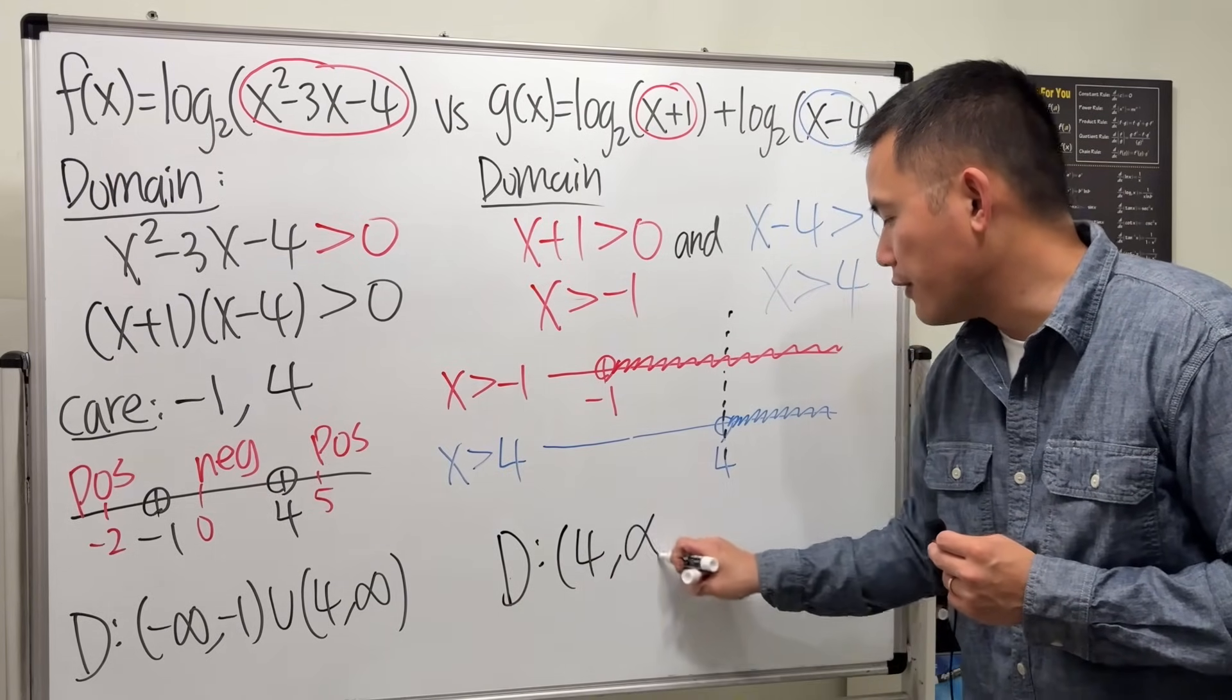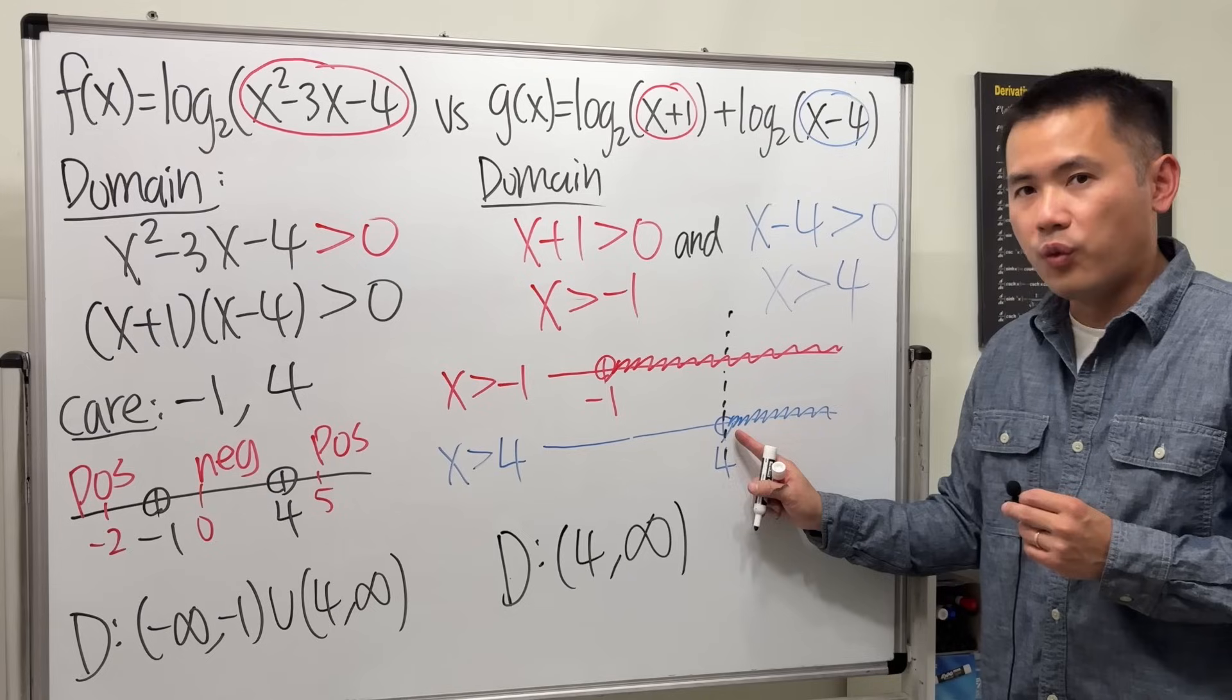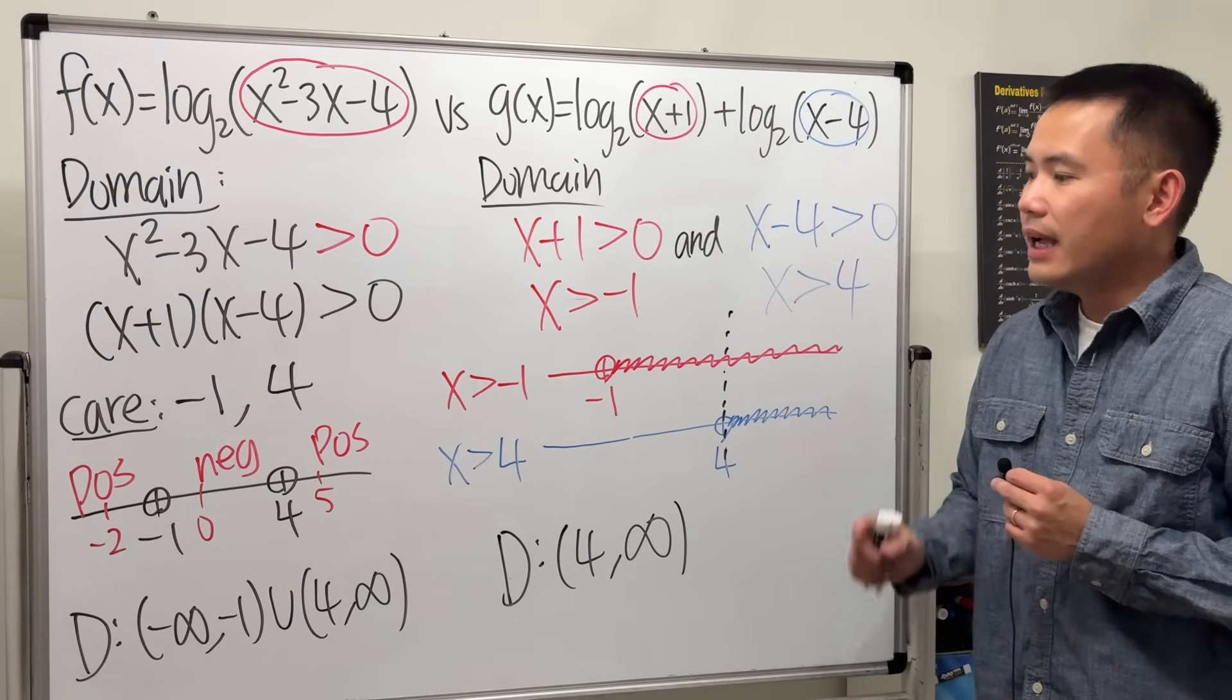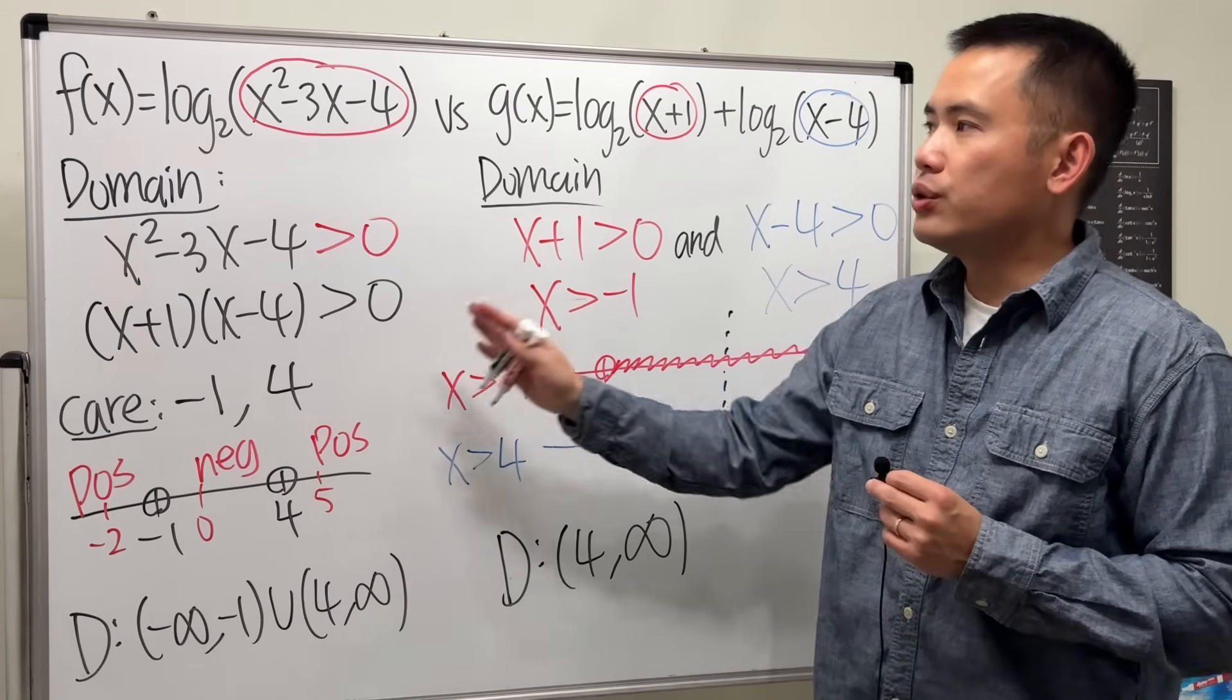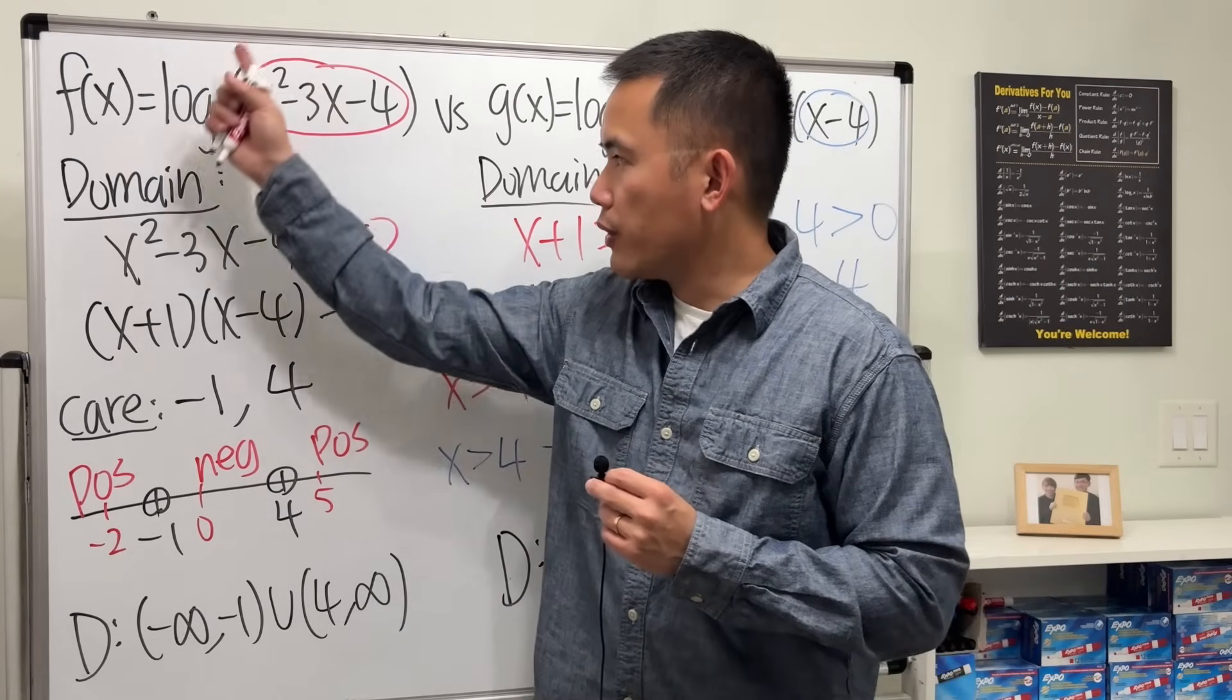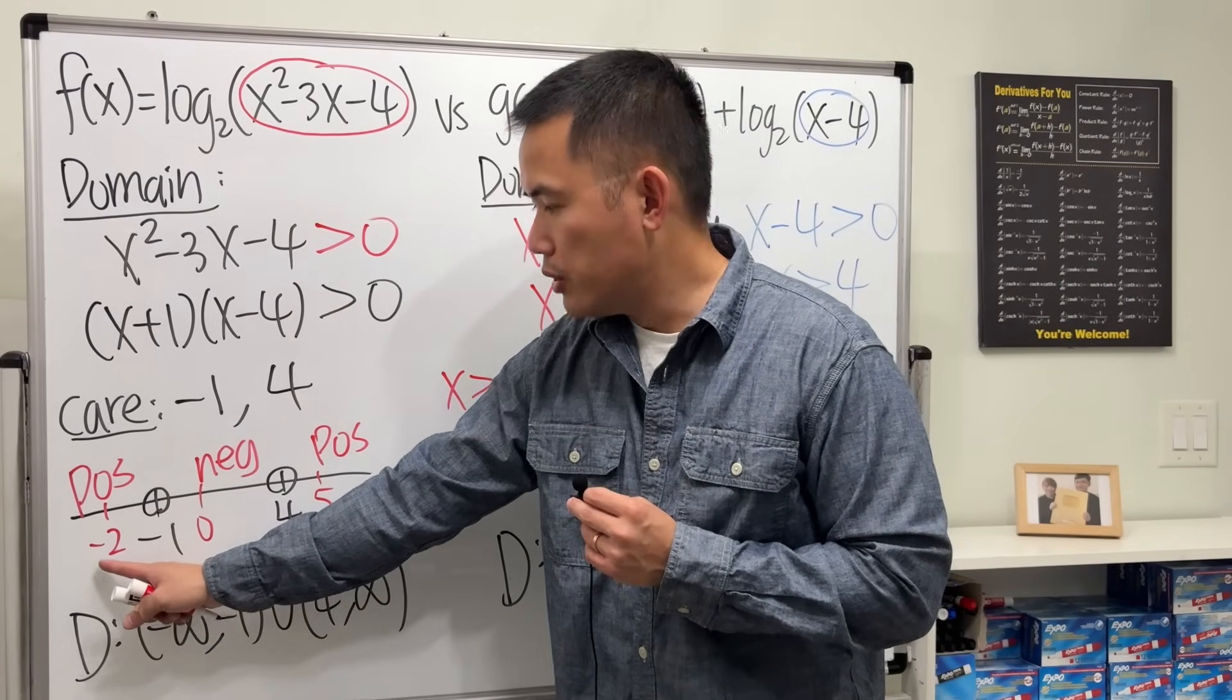4 to infinity, do not include the 4 though, because there's an open circle, so you cannot have 4. As you can see, these two functions, they do not have the same domain.